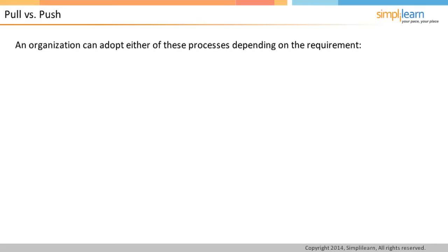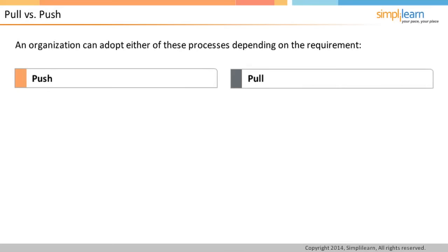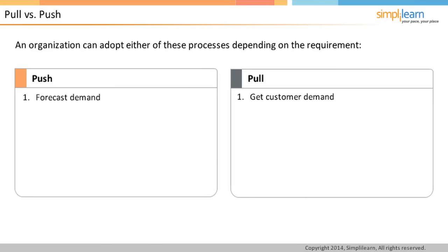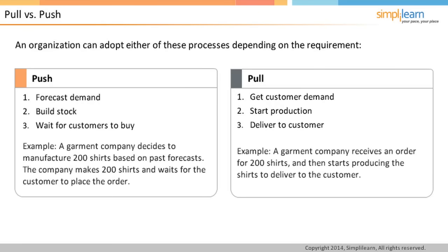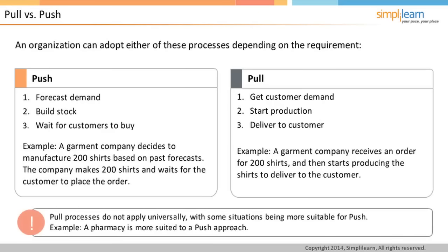In a push process, the first step is to forecast the demand for a product or service, the production line fills this demand, and produced parts are stocked in anticipation of customer demand. For example, a garments manufacturer produces 200 shirts based on expected demand and then waits for customer orders. In a pull process, production starts only after receiving confirmed demand from customers. Note that although the pull approach seems better, it is not applicable to all situations — for example, a pharmacy uses a push process.